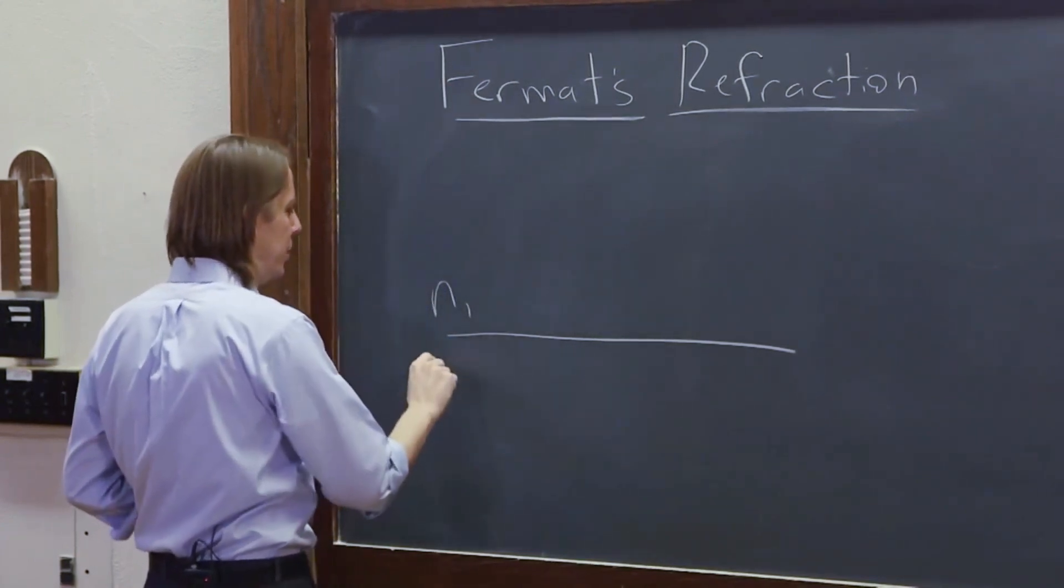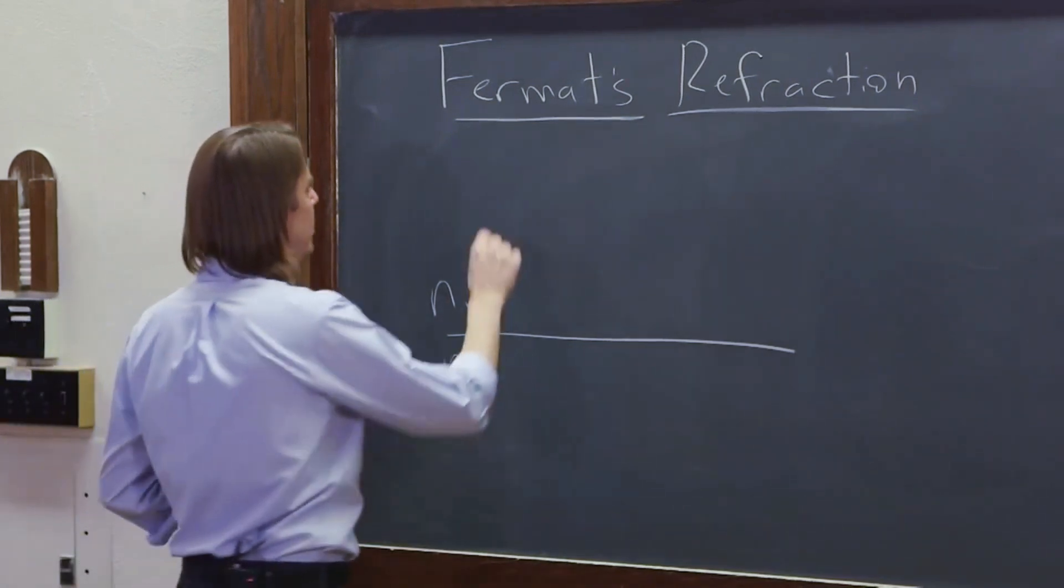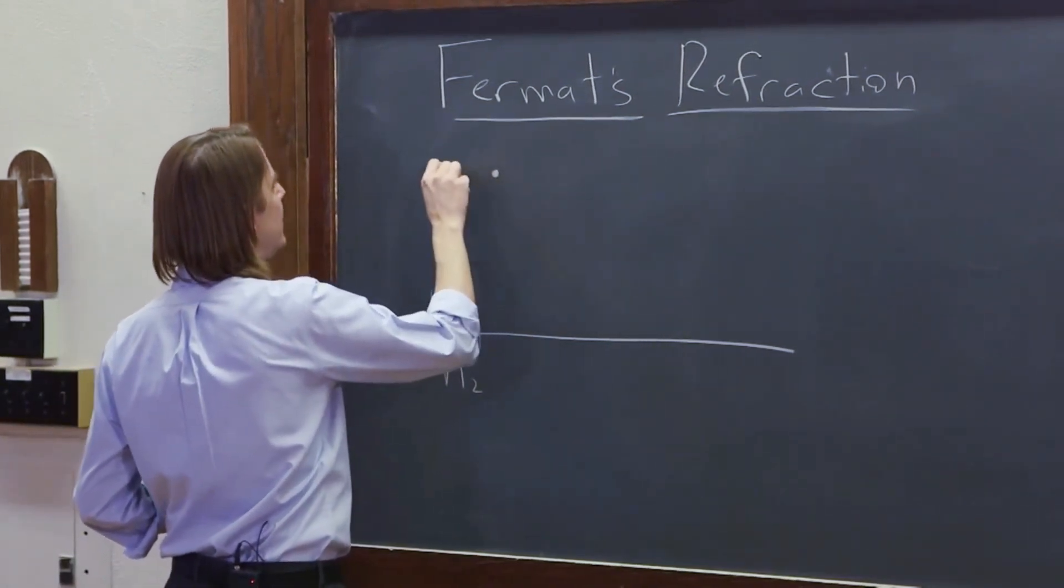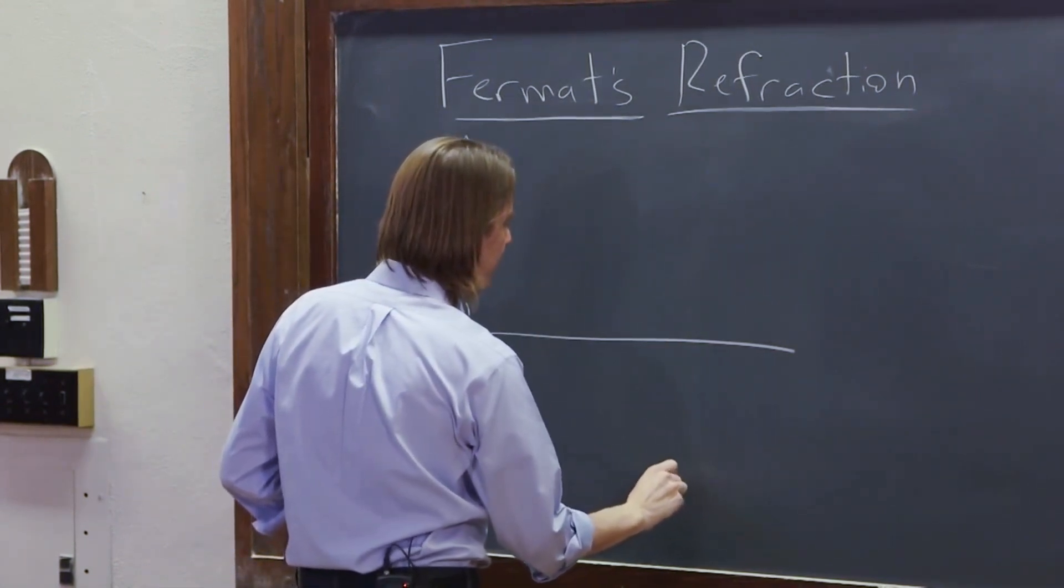So we'll call up here n equals 1. We'll call down here n equals 2. And we're going to say we want to get some light from point A to somewhere around here in point B.